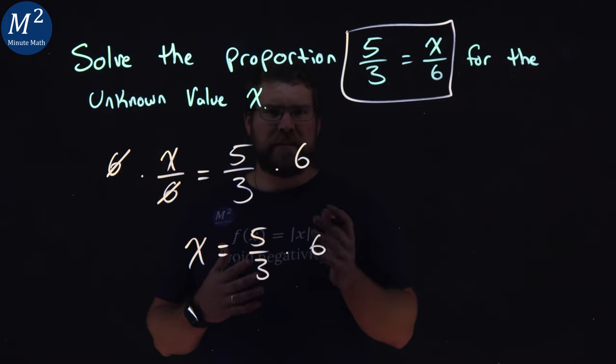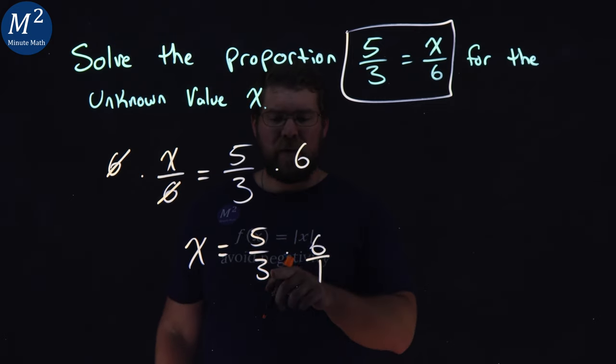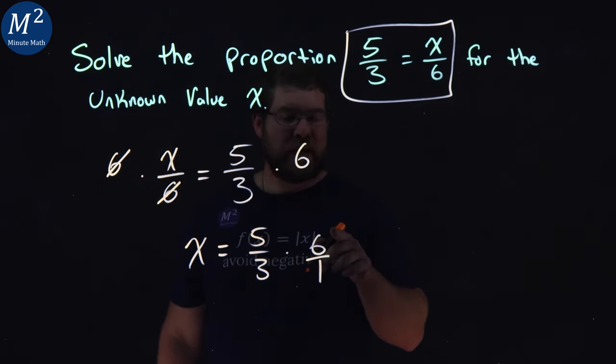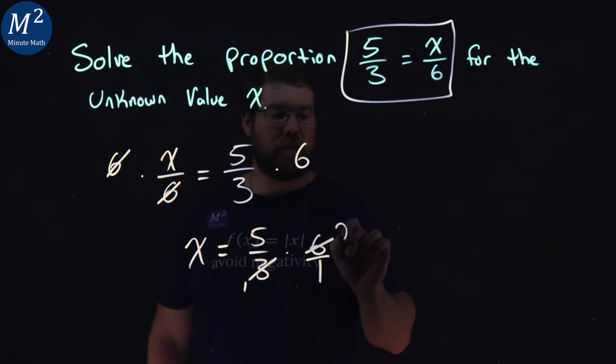And this is where I like to see what I can cancel. That multiplied by 6 is 6 over 1. And 3 goes into 6 two times. So cancel the 3, you get a 1. And the 6 becomes a 2.